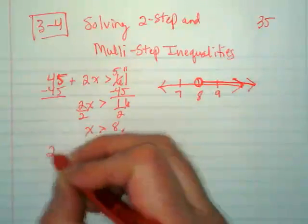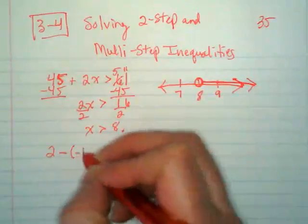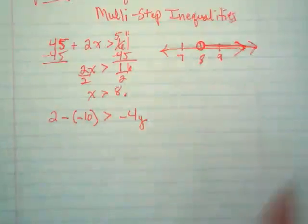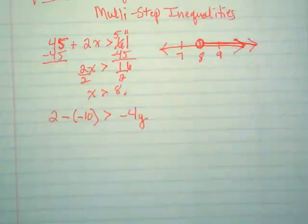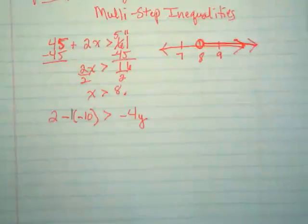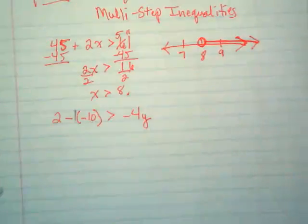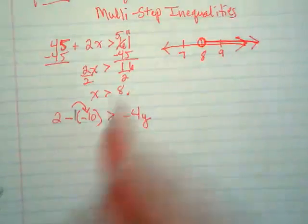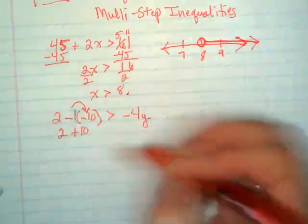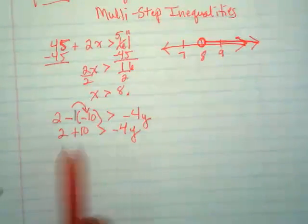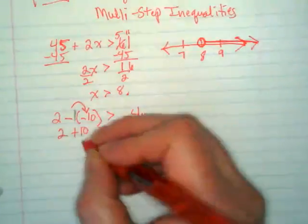Let's try something a little bit more challenging. I'd like you guys to write down 2 minus negative 10 is greater than negative 4y. What do I have here that's invisible? So my first step with this, I like to make them visible. I'm a visual person, and if I don't, I forget that I need to multiply. Negative 1 times negative 10 would be 10. And I'm going to bring down the 2 and the inequality. Everything else stays the same. Then I'm going to combine like terms. 2 plus 10 is 12.